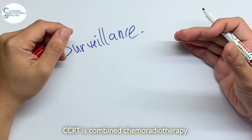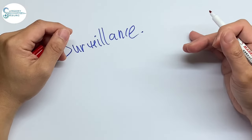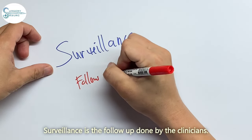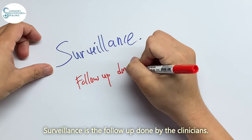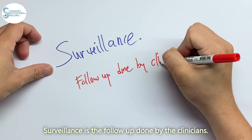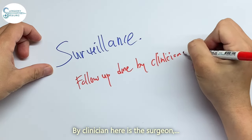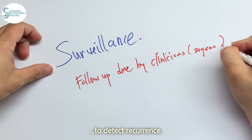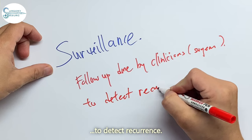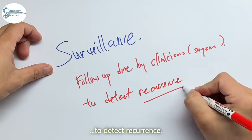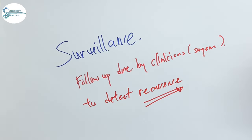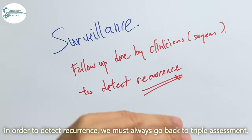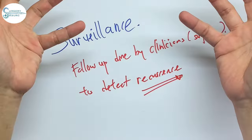CCRT is combined chemoradiotherapy. Surveillance is the follow-up done by the clinicians, the surgeons, to detect recurrence. In order to detect recurrence, we must always go back to triple assessment.